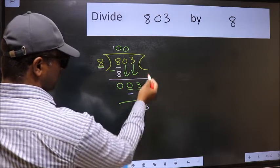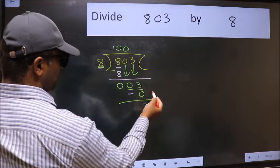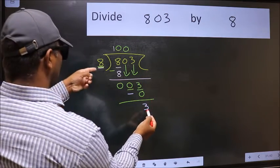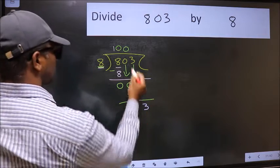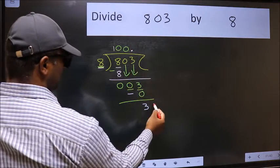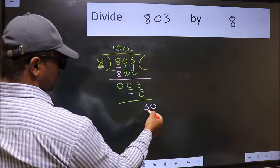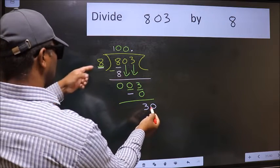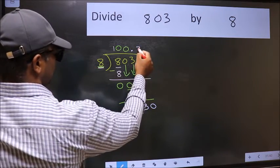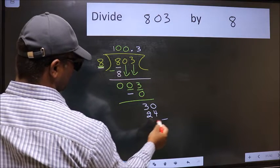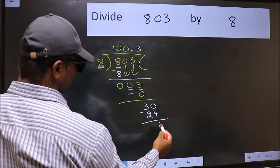Over here, we did not bring any number down. And 3 is smaller than 8. So now we can put dot and take 0. So 30. A number close to 30 in 8 table is 8 threes, 24. Now we should subtract. We get 6.